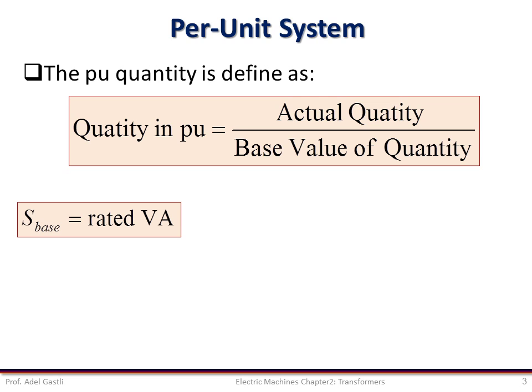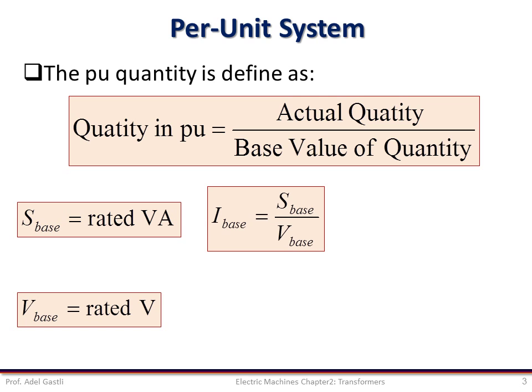The base power S_base is equal to rated volt amps and the base voltage is the rated voltage. Then base current and base impedance can be calculated as follows. The base current is the ratio of the base power over the base voltage and the base impedance is the ratio of the base voltage over the base current or the ratio of the square of the base voltage over the base power.